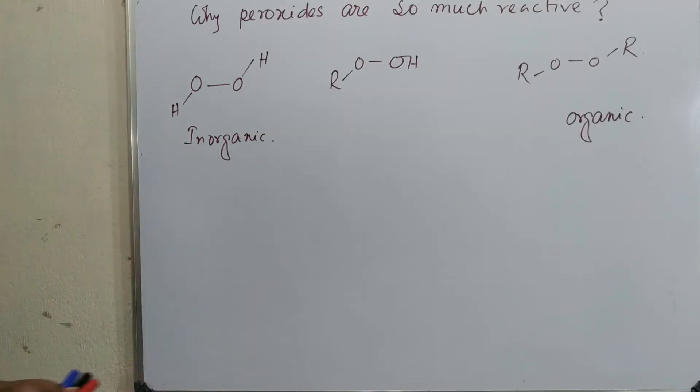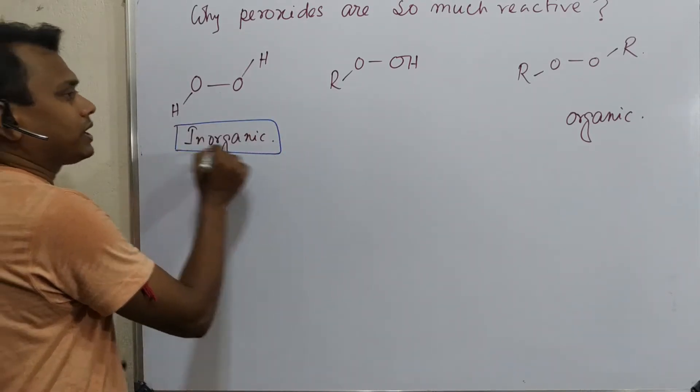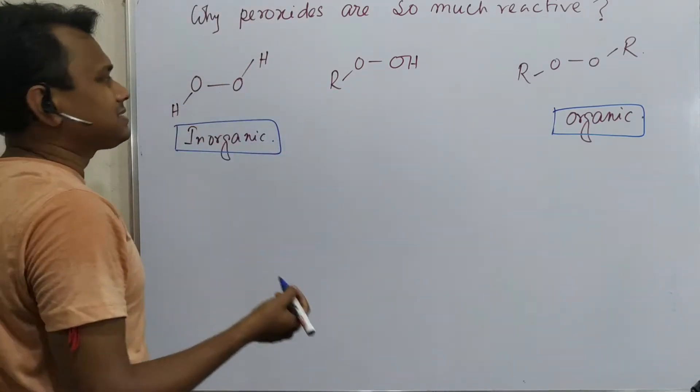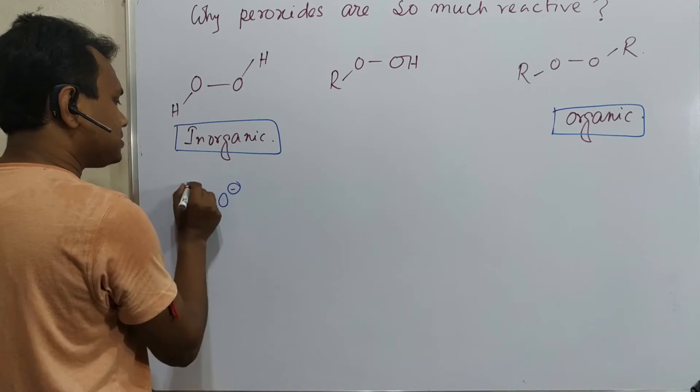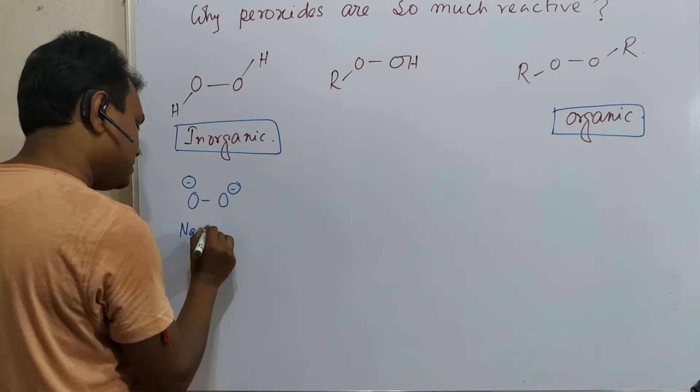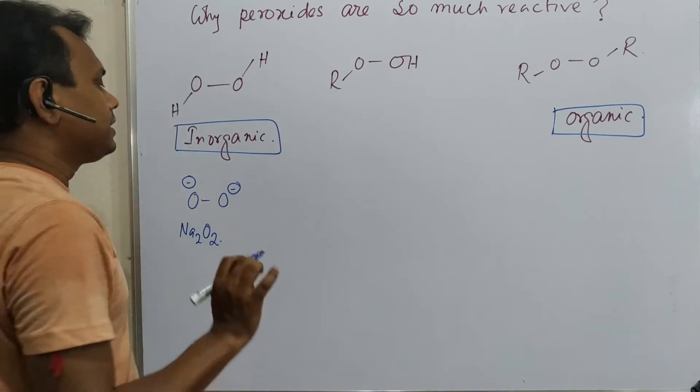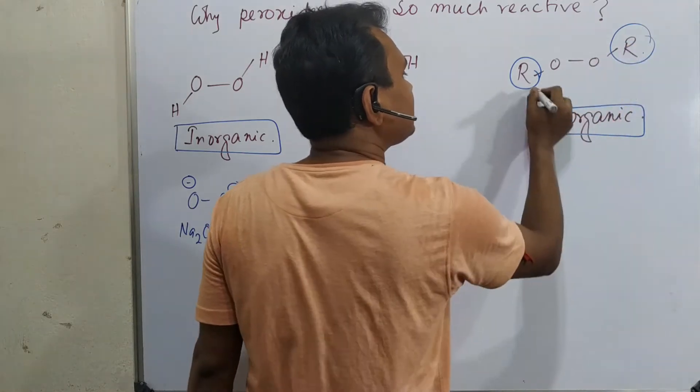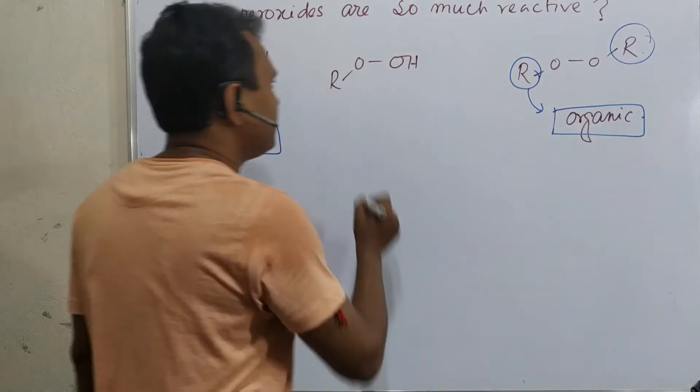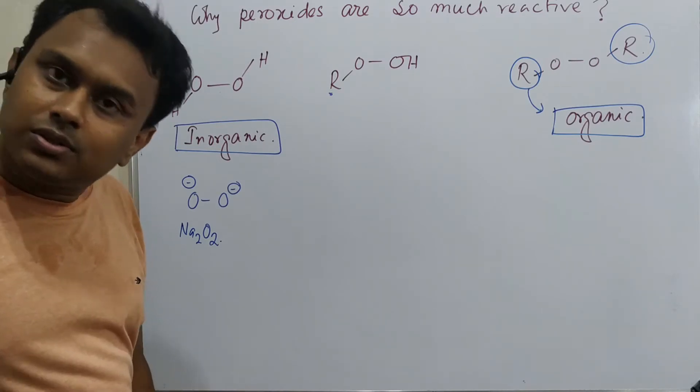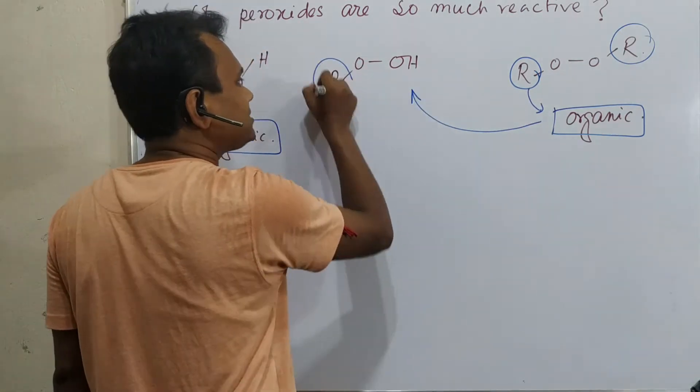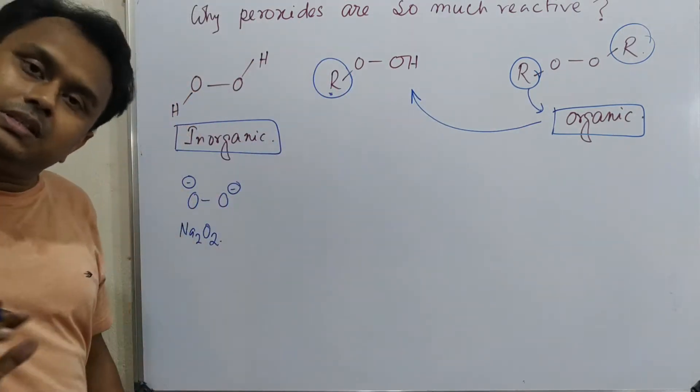So let's start. If you look at peroxides, they can be categorized in two ways: one is inorganic, another is organic. Inorganic means O-O or peroxyl salts like sodium peroxide. This is organic because these R groups are organic groups, that's why they are called organic peroxides. But there are some other categories also like R-O-O-H, like ether hydroxide. This also belongs to the organic category because there is an R-O group.